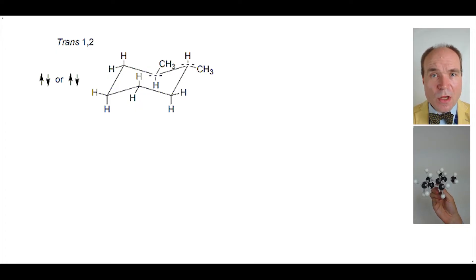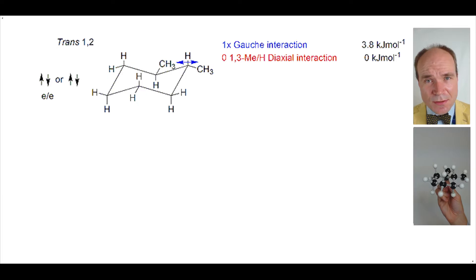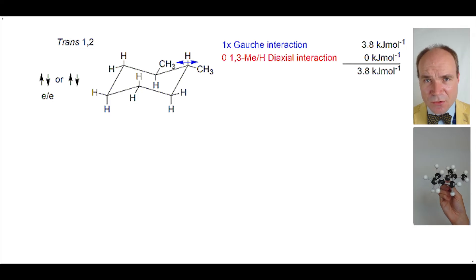In this chair conformation, both methyl groups are equatorial. So what steric strain does this conformational chair arrangement have? There is one gauche interaction, and this adds 3.8 kilojoules per mole. But there are no 1,3-diaxial interactions. So the total energy added to the molecule due to the steric strain is 3.8 kilojoules per mole.